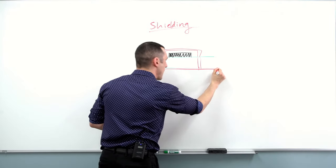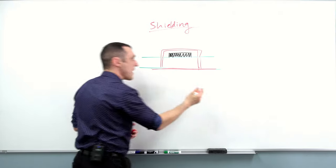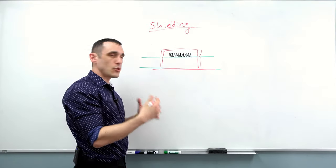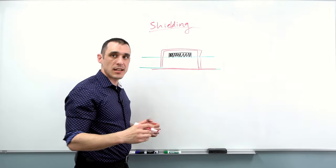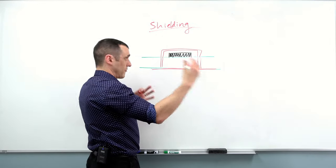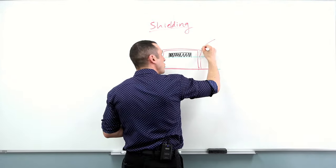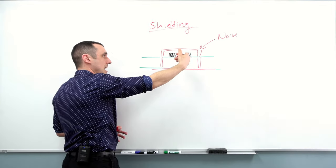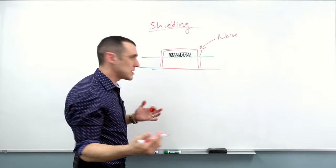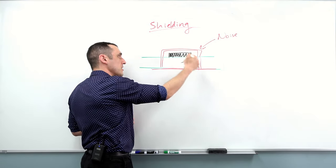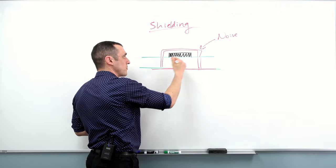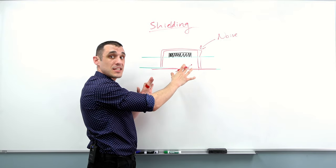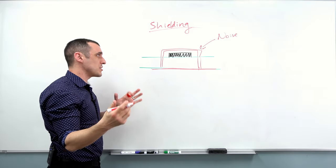They'll attach the shielding can to some pads and connect it to ground, usually on the next layer. That basically creates a totally enclosed cage that prevents any noise from escaping this component and possibly reaching other circuits. Vice versa, it also prevents any noise from outside from entering inside the cage at very high frequencies and interfering with the operation of this component.